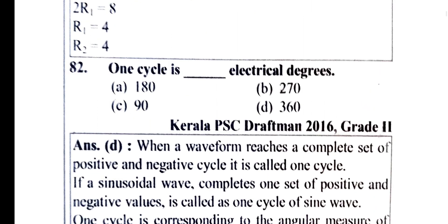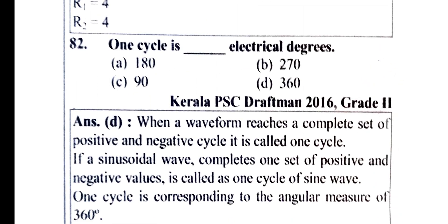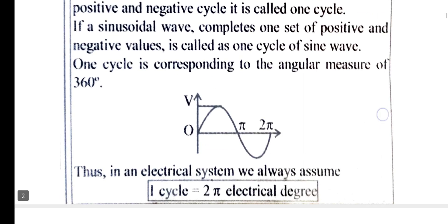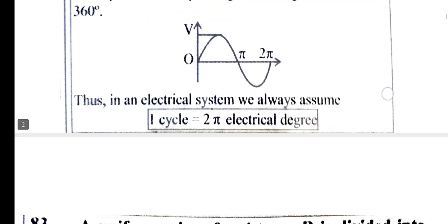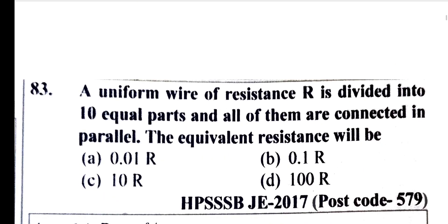One cycle is how many electrical degrees? One cycle equals 360 electrical degrees.